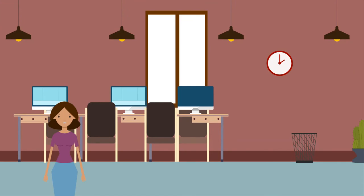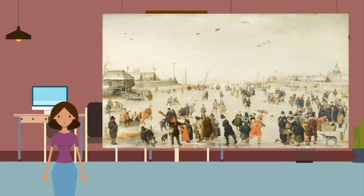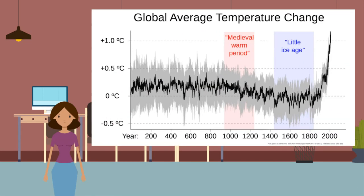Historical records and sources can be used to gain an understanding of climate before accurate temperature measurements were taken, especially from the past 2,000 years. Photos, illustrations, and paintings can show what the past landscape was like — there are many paintings from around the Little Ice Age depicting a cold climate with frozen lakes and seas. Records of animal behavior and migration, or dates that trees flower, can indicate temperatures. Books, journals, and newspapers can be used to understand the climate or date weather events. Historical sources cannot be used as accurate sources of climate data, but they can provide an idea of temperature trends.